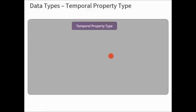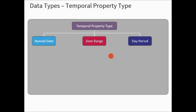The temporal property type is used when routing and asset management holds information on restrictions that generally apply for a temporal period. Temporal properties have been categorized into three main types: named date, date range, and date period. Temporal properties are applied to four features: access restrictions, highway dedication, turn restrictions, and special designation.